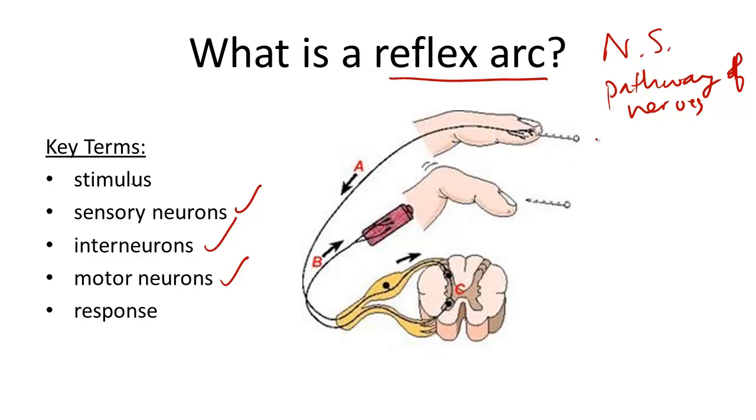When a stimulus occurs, something that might create a response in the body, such as a pinprick, the receptors in the skin and the finger quickly send a nerve impulse through sensory neurons, labeled A.